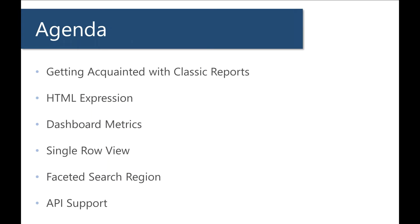Today I want to make sure everyone gets acquainted with the tried-and-true classic report, and then we'll cover a few extra concepts to really make your classic reports sing. We'll talk about how to leverage HTML expressions, the report's place in dashboards, and how to inspect a single record — including some developer approaches that may not be the best solution. We'll also cover some new stuff from APEX 19.2, the faceted search region and how it relates to classic reports, and new API support coming to essentially all regions, which the classic report will benefit from.